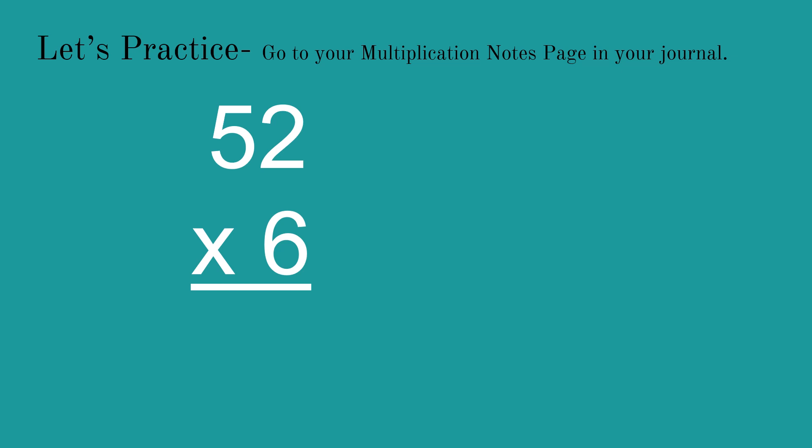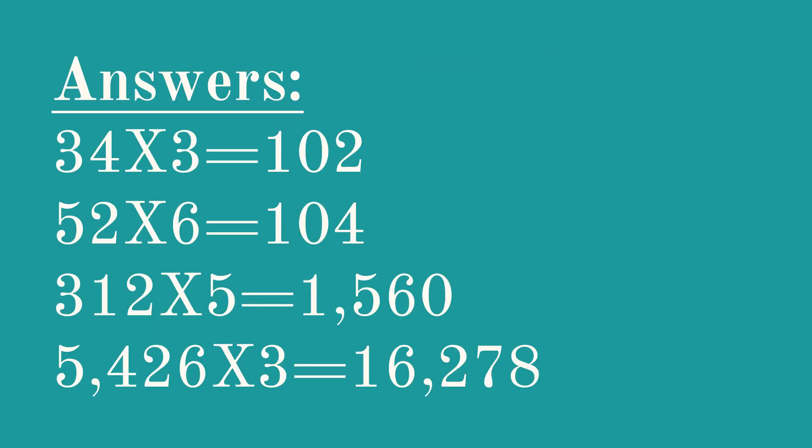Question number two. When you're ready to continue or you're ready to work it out, hit pause, work it out on your paper, hit play to see the next problem. Problem number three, work it out on your grid paper. It doesn't change the process. Problem number four, work it out on your grid paper. Give yourself plenty of space. And when you're ready to see the answers to all of them, hit play. So here are the answers to all of the questions: 34 times 3, 52 times 6, 312 times 5, and 426 times 3.